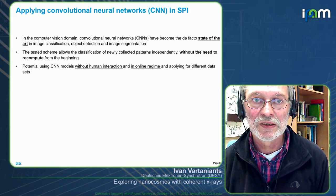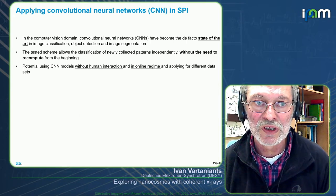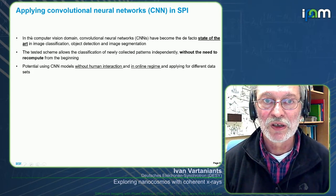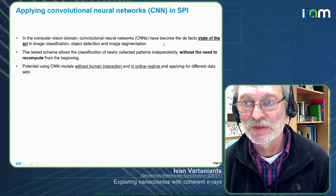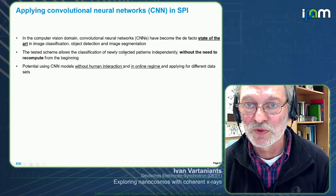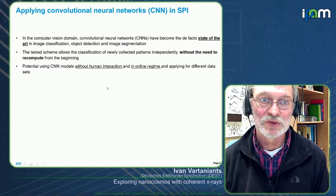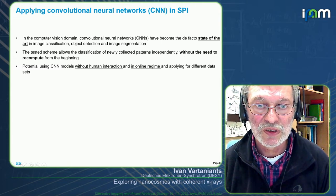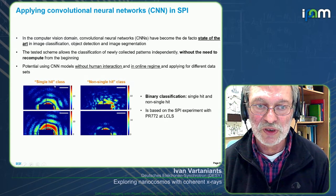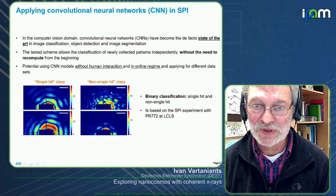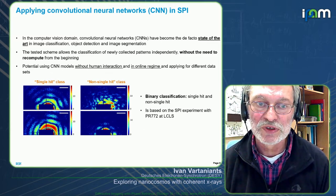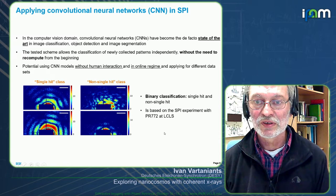Applying convolutional neural networks is really the mainstream at the moment in the computer vision domain. CNNs have become the de facto state of the art in image classification. The tested scheme allows classification of newly collected patterns independently without the need to recompute from the beginning. Here we had a very simple binary classification: a single-hit class and a non-single-hit class — we want to distinguish between them.